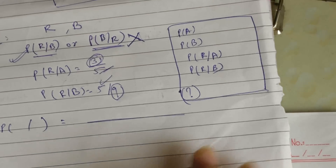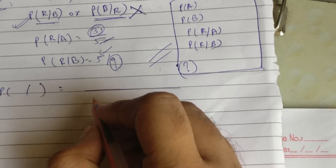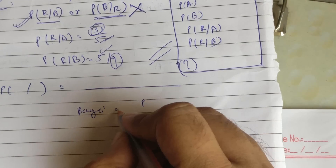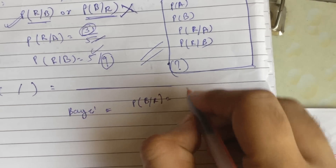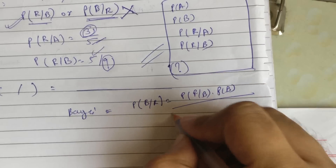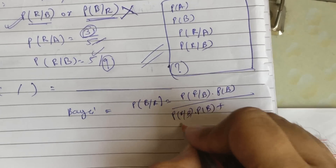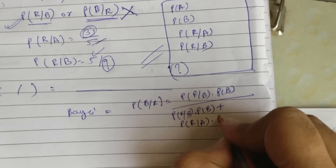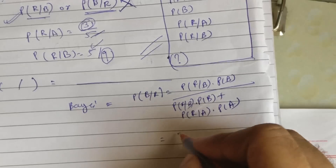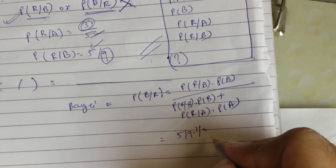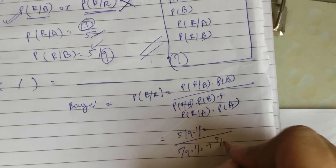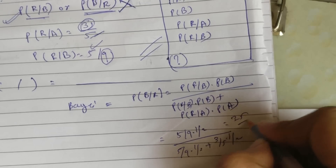Apply the Bayes theorem formula. The question is P(B|R), so the formula is: P(B|R) = [P(R|B) × P(B)] / [P(R|B) × P(B) + P(R|A) × P(A)]. Plugging in the values: numerator is (5/9) × (1/2), denominator is (5/9) × (1/2) + (3/5) × (1/2). The answer is 25/52.